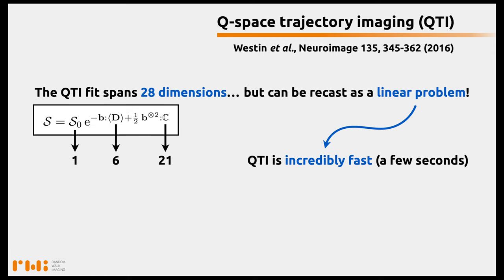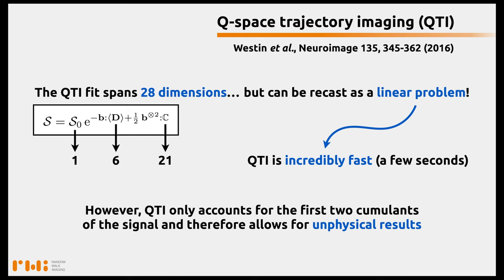A QTI inversion takes roughly a few seconds. The problem is that QTI only accounts for the first two cumulants of the signal, and therefore allows for unphysical results. For example, the isotropic mean kurtosis — related to the variance of cell densities — may be negative in certain voxels featuring predominant noise. Of course, parameter maps can be curated afterwards, since we already know these quantities should be positive numbers, and this is also a way to detect voxels with very high noise and simply correct them.